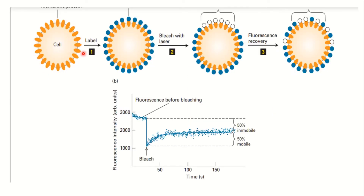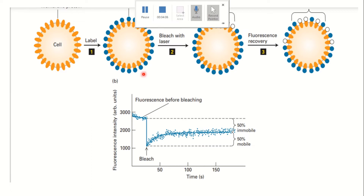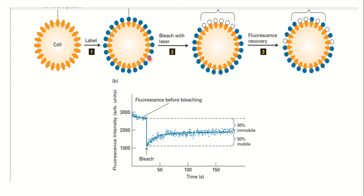Suppose you have taken a cell with a plasma membrane and you have a protein or lipid molecule. First, we label that protein fluorescently — using a fluorescent antibody, GFP, or any fluorescent tag. Now we have labeled this protein. Then we select a particular area in the membrane and add a laser beam to that area, which photobleaches it — removing the fluorescent tag from that region while the rest of the proteins remain tagged.